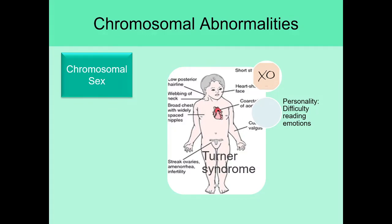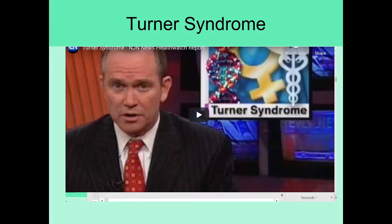A person with Turner syndrome is often very engaging and their personality is generally typical, except they have difficulty reading other people's emotions, so they may seem insensitive to others. They also tend to display learning disabilities — normal intelligence levels combined with being behind in reading or math. Finally, infertility is a symptom. The picture shows streak ovaries, where ovaries look like they were starting to convert over from gonads but never fully developed, never fully distinguishing themselves as ovaries loaded with eggs. A video on Turner syndrome will load up next in the playlist to illustrate this condition further.